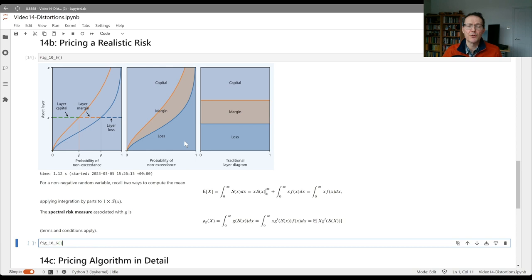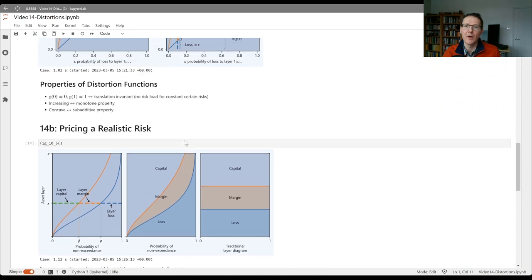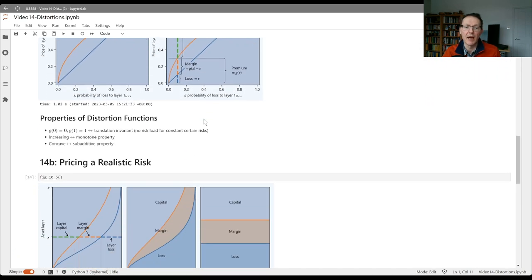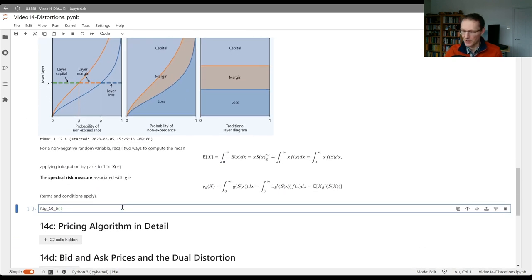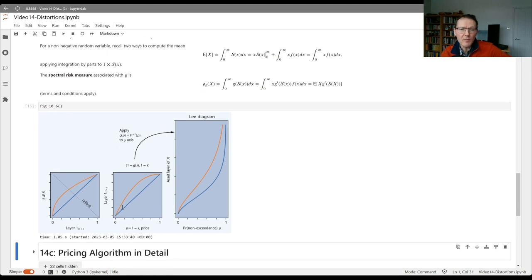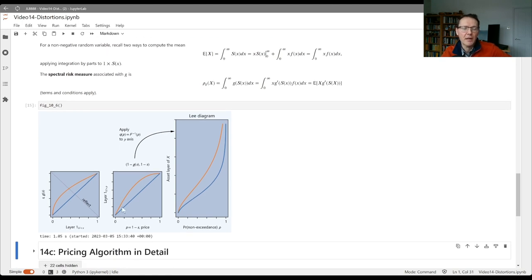This is the traditional picture for a realistic risk. How do I square this picture, which was our simple single layer, with this picture? Here we've got figure 10.6 from the book, which takes us through that process. The original picture that we had of the distortion, it's useful to look at the meanings of the two axes.